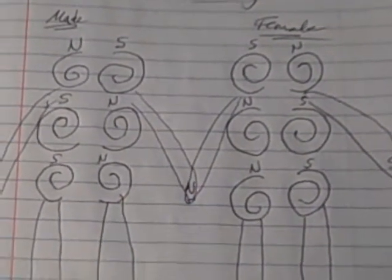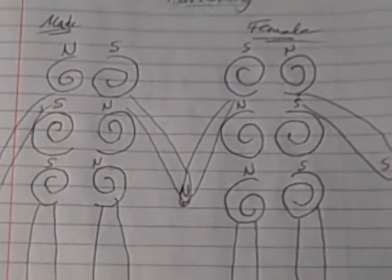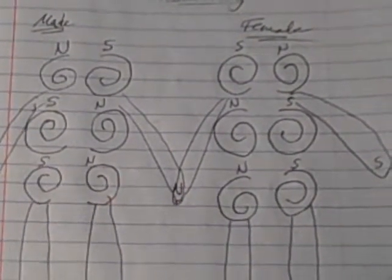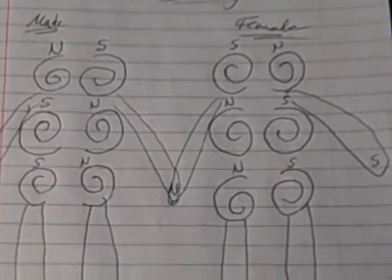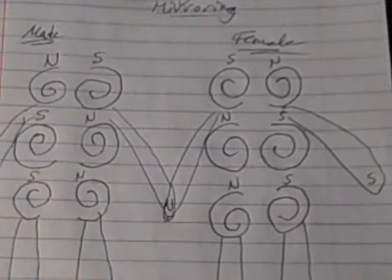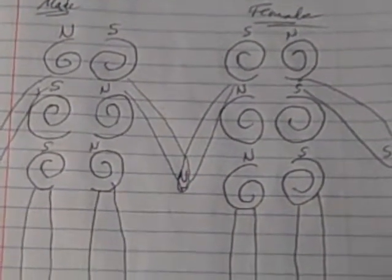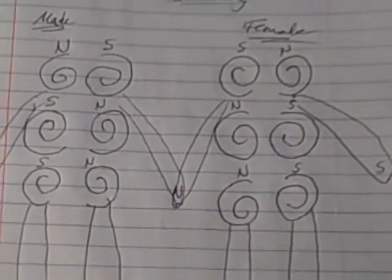The basic thing is that males and females complement each other precisely because they have complementary, essentially mirror image, magnetic spin structures. I've made a number of other videos where I touched on these ideas.